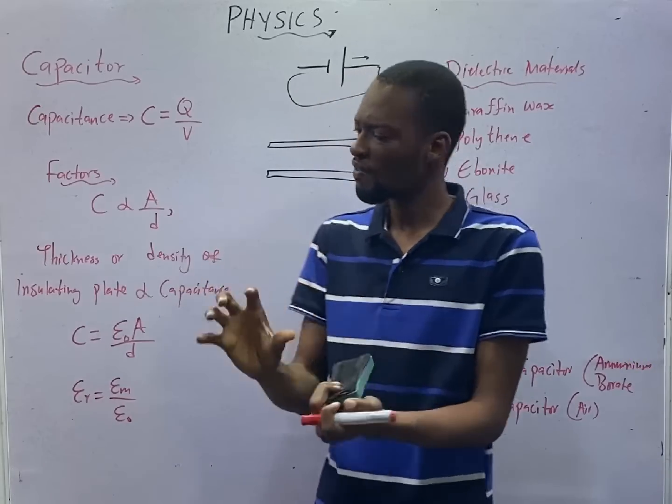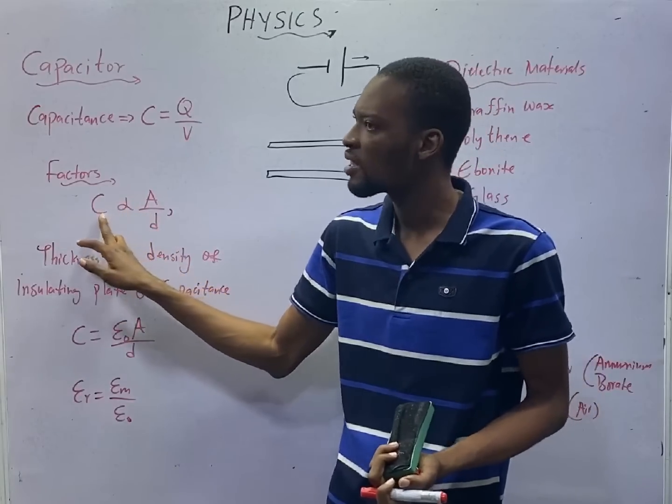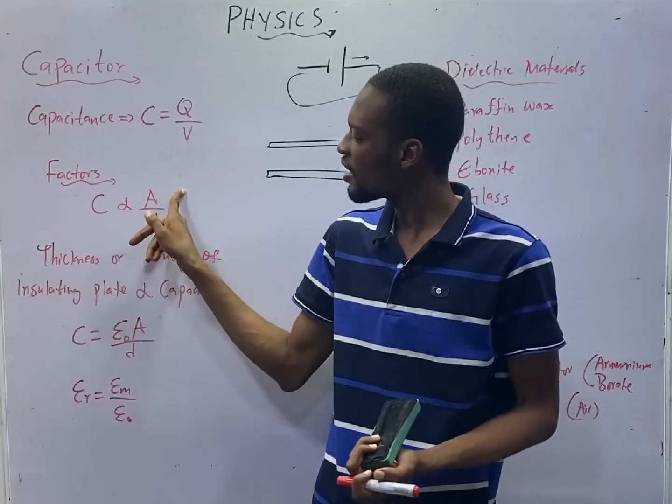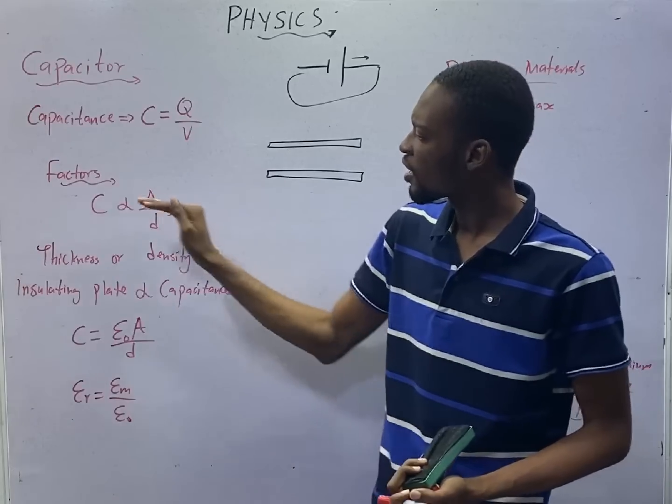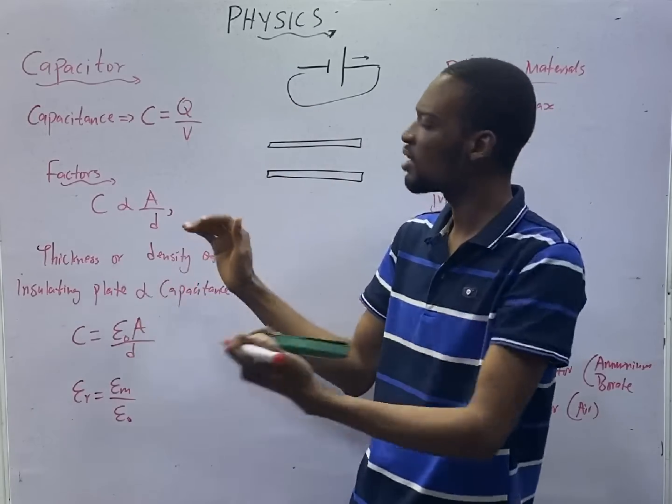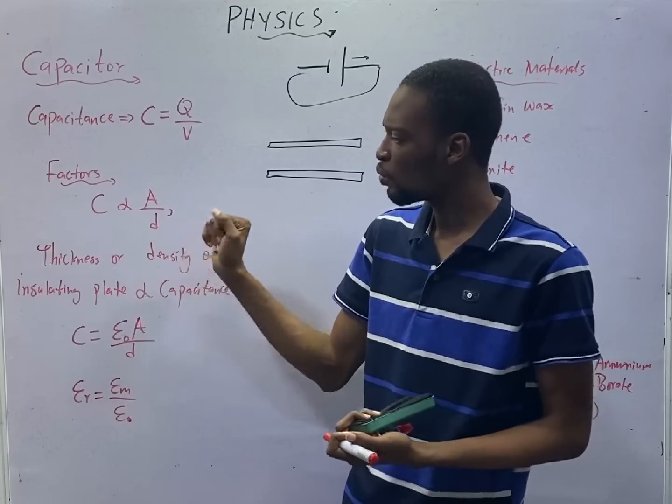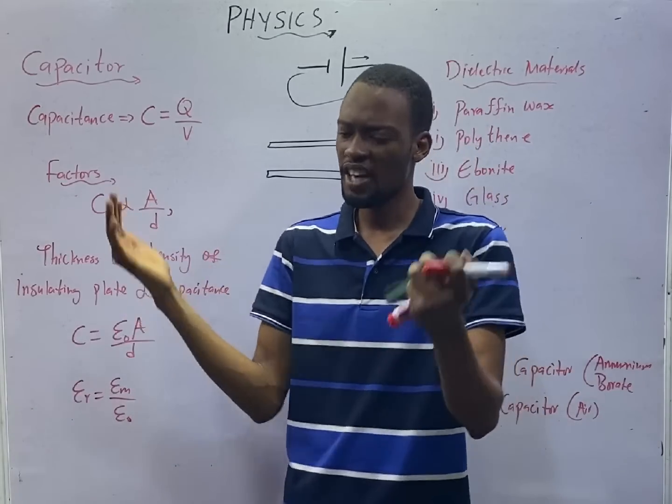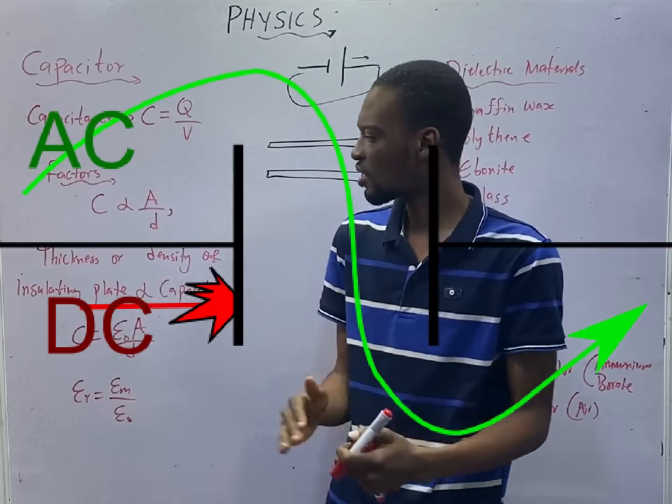There are factors that affect capacitance. This formula is enough to explain that C is proportional to A over D. C is capacitance, A is area, and D is distance of separation. So capacitance is directly proportional to area. The more the area you have, area of the plate, the more the capacitance. Now D is at the bottom, which means capacitance is inversely proportional to the area. As you increase the area, the capacitance will reduce. As you reduce the area of separation, the capacitance will increase.